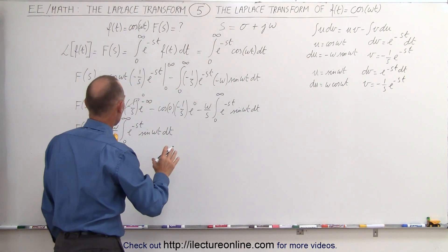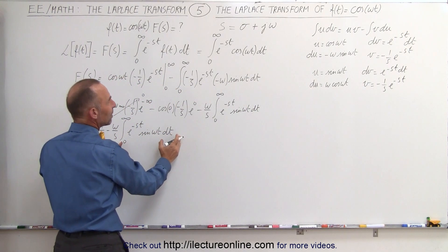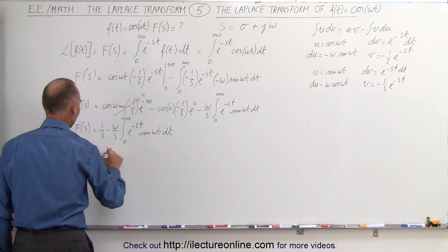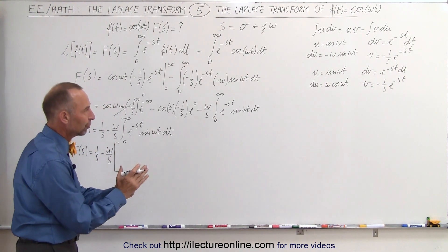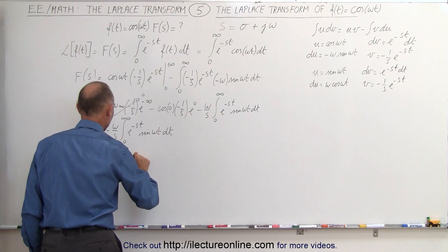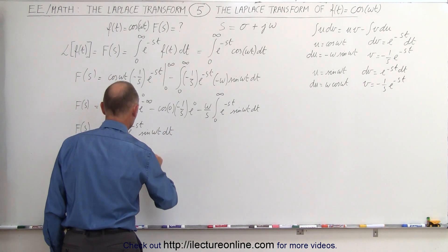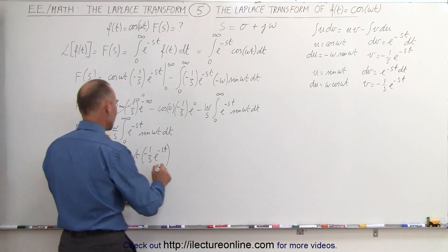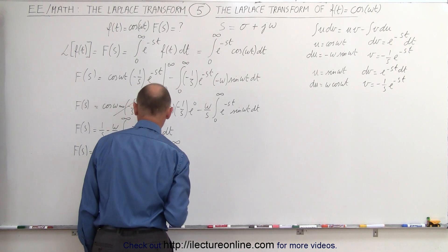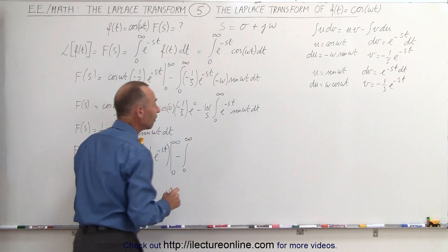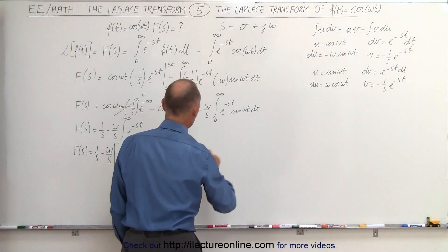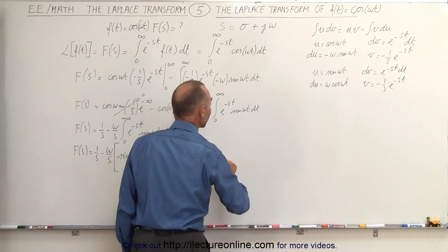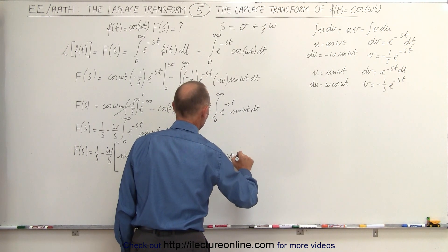Plugging that in again, this integral is u·v minus the integral of v du. So F(s) equals 1/s minus (ω/s) times the whole expression: u·v is sin(ωt) times −(1/s)·e^(−st), evaluated from 0 to infinity, minus the integral from 0 to infinity of v du, which is −(1/s)·e^(−st) times ω·cos(ωt) dt.